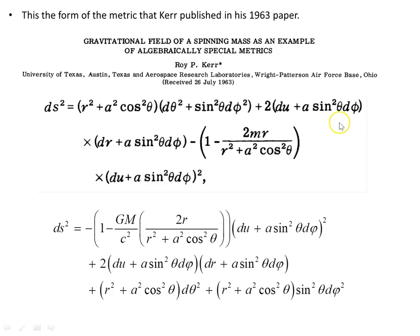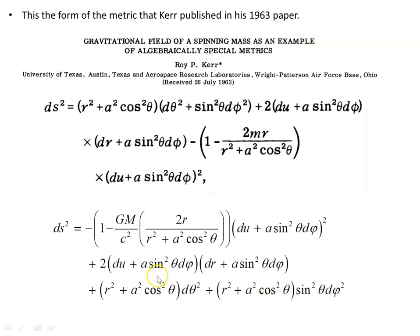The result is the Kerr metric in the same form Kerr published in his original 1963 paper. Kerr used natural units with G = c = 1, whereas here G and c are included explicitly, but the result is otherwise identical. These are the steps of the Newman-Janis method that reproduce the Kerr metric from the Schwarzschild seed metric.